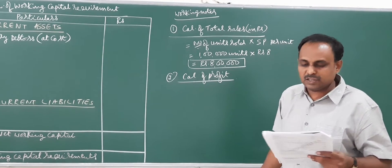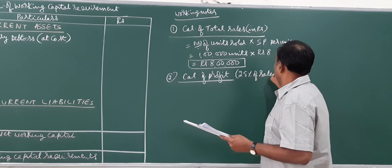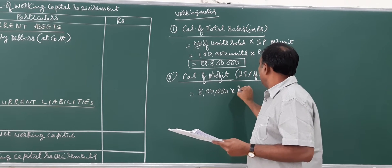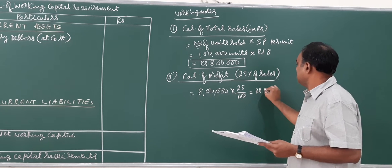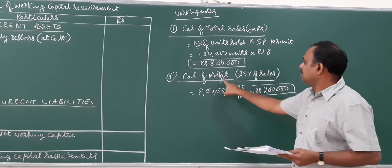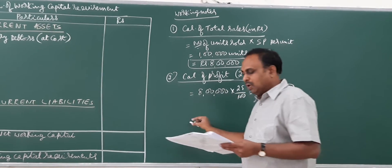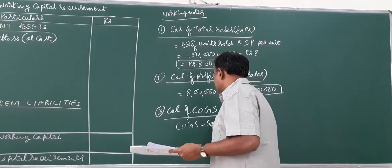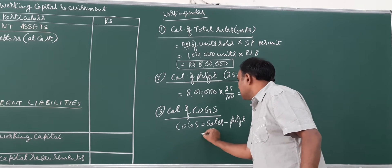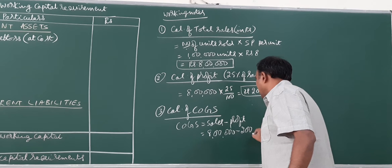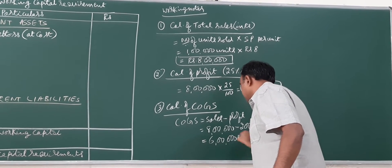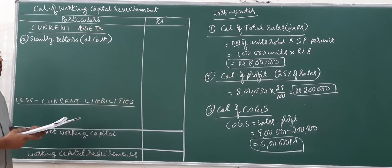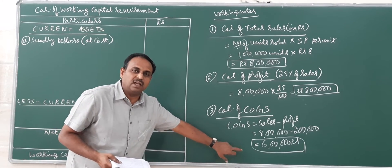We also have profit information. Percentage of net profit on sales is 25%, as given in the problem. Sales of 8 lakhs multiplied by 25% gives rupees 2 lakhs as profit. Now, sales minus profit gives cost of goods sold (COGS): 8 lakhs minus 2 lakhs equals rupees 6 lakhs as cost of goods sold. This is important because debtors are to be calculated at cost.